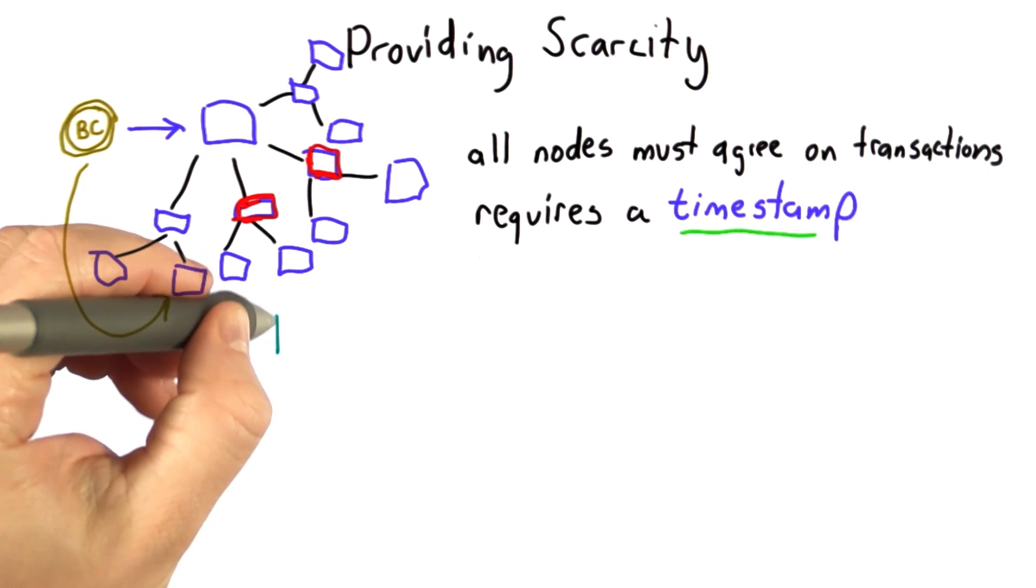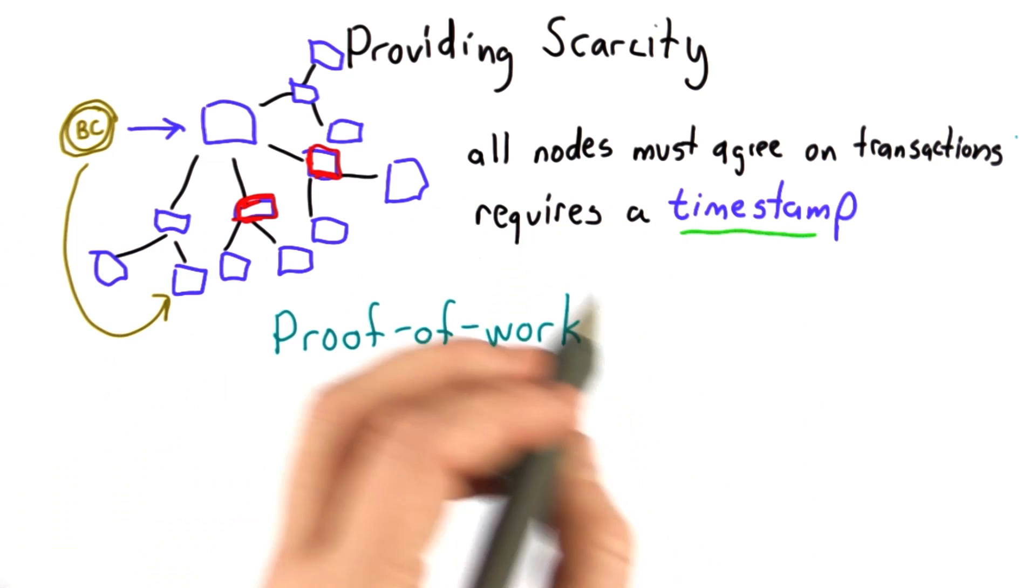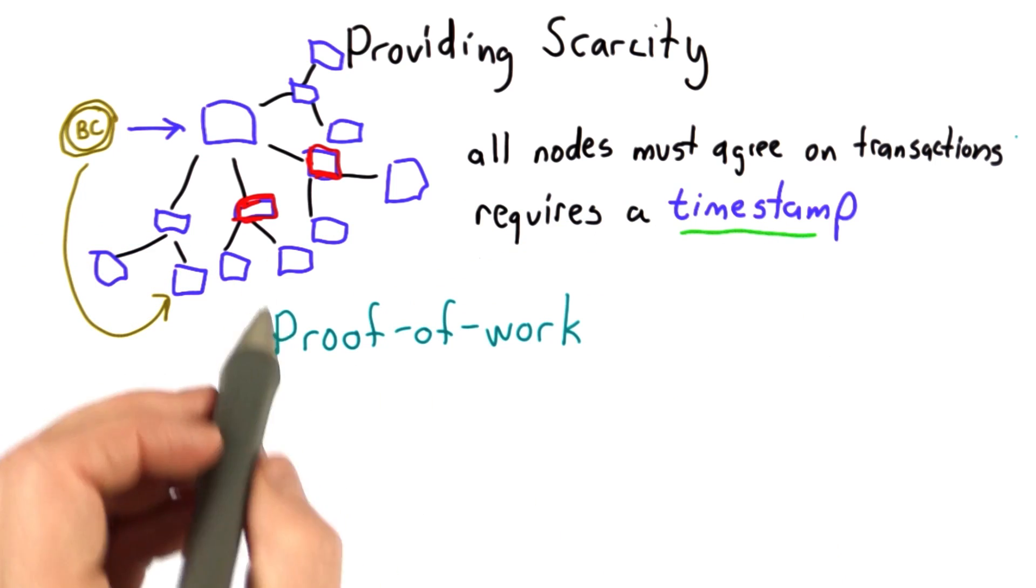The key to this is requiring a proof of work. For each timestamp, we're going to have a new block, and we need to know that creating those new blocks requires work.